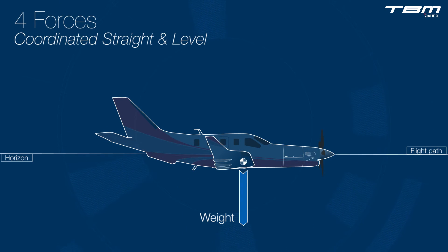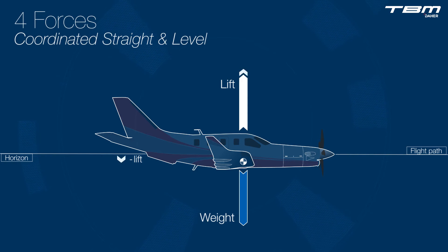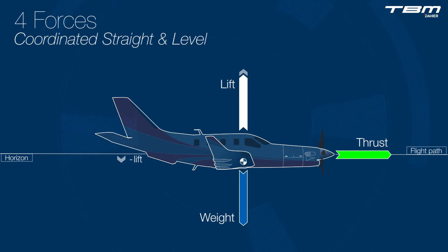Weight always pulls the aircraft towards the center of the earth. Counteracting weight is lift, which acts perpendicular to the relative wind — perpendicular to the flight path. Total lifting force is greater than weight, for it must also compensate for the negative lifting force created by the horizontal stabilizer. The thrust axes of most single-engine airplanes are not exactly aligned with the fuselage, which helps compensate for left-turning tendencies.